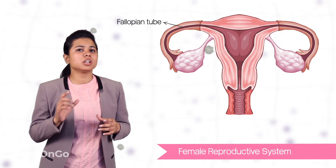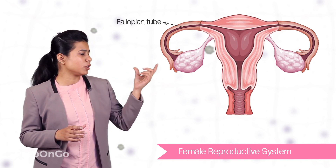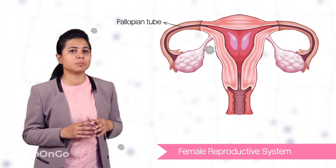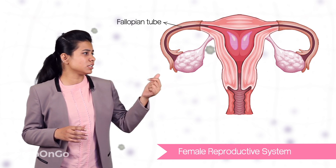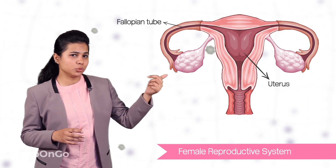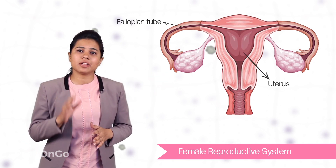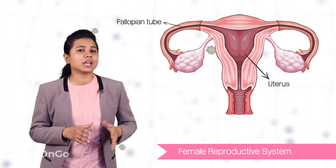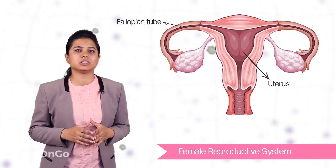You can see here that these fallopian tubes are opening into a bag-like structure. This is the uterus. The growth and the development of the fertilized egg or the zygote takes place here only.